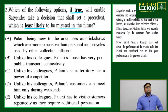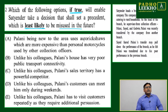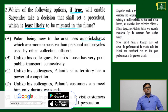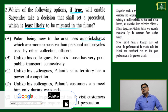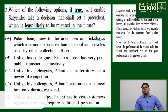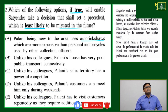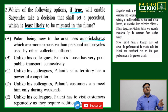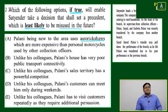Let's read Option A: 'Probably being new to the area, Palani uses auto rickshaws which are more expensive than personal motorcycles used by other collection officers.' We hold on this because it seems like a contradiction — if Palani is a poor performer, why is he using auto rickshaws which are much more costly than the personal motorcycles used by other collection officers? Due to this, we can say Option A is giving a reason in favor of Palani.